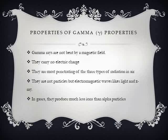For the gamma particles or gamma rays: gamma rays are not bent by a magnetic field. They carry no electric charge — that is, they are neutral — meaning if you pass them in an electric field they will neither deflect to the positive terminal or the negative terminal; they will just pass through undetected. They are the most penetrating of the three types of radiation in air, meaning they travel furthest in air, and usually their movement can only be stopped by a thick block. Gamma rays are not particles but electromagnetic waves or electromagnetic radiations, like light and the X-ray. In gases, they produce much less ions than alpha particles.